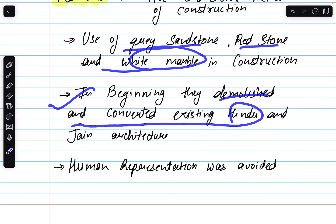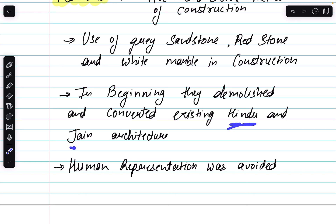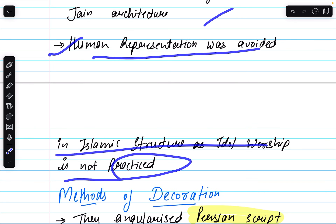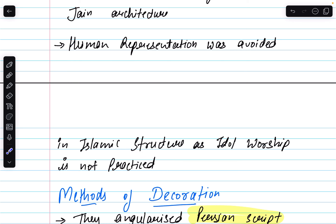In the beginning, existing Hindu and Jain infrastructures and architectures were demolished and converted. As per Islamic belief, human deities as a form of God or worship was not acceptable, so the existing pillars and everything were demolished and then their own architectural designs and structures were built over the demolished places. Human representation was avoided in Islamic structures as idol worship is not practiced — every religion has a set of rules and constraints, and in Islam, individual human representation in idol worship was not acceptable.